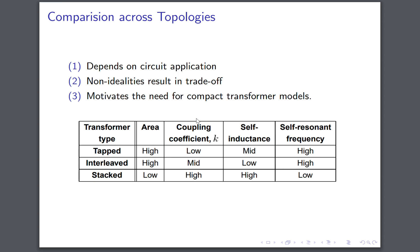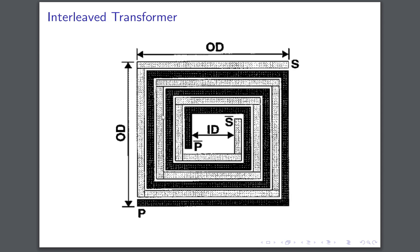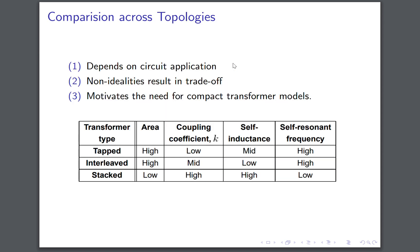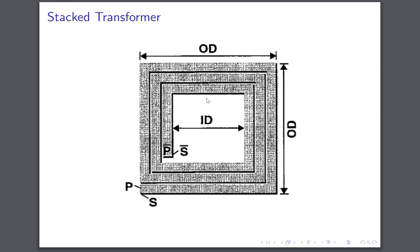And there is a generalized comparison. You can view this as some sort of just a guiding light. Tapped transformer has a high area and has a low coupling coefficient, and its self-resonant frequency is high, meaning that it can work decently up to high frequencies of interest. The interleaved transformer has performance in between the tapped and the stacked transformer. The stacked transformer has extremely low area and is compact and has a high coupling coefficient. However, its self-resonant frequency is extremely low because of severe parasitics at every node.